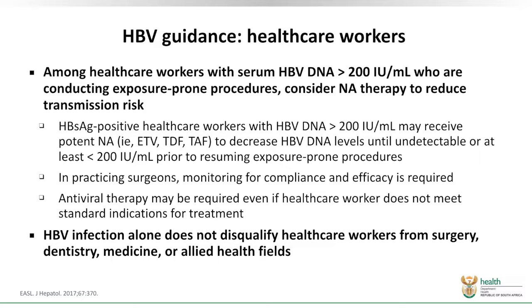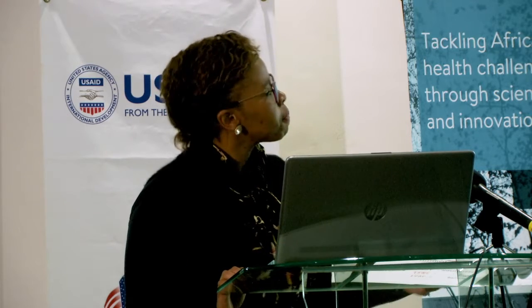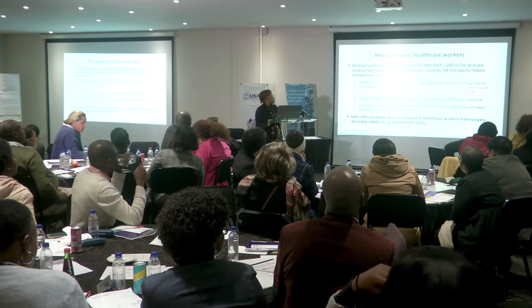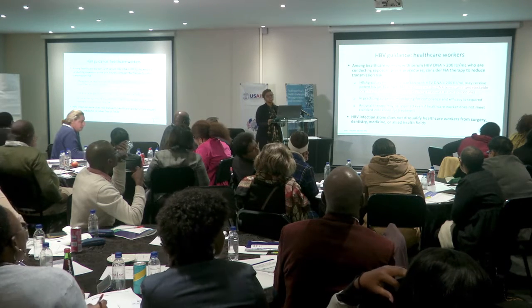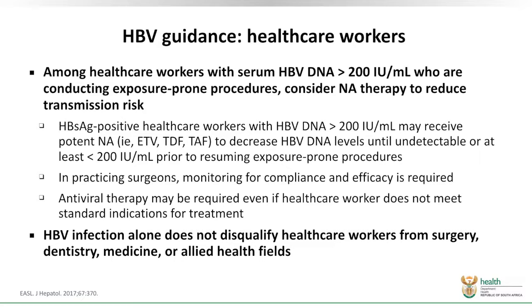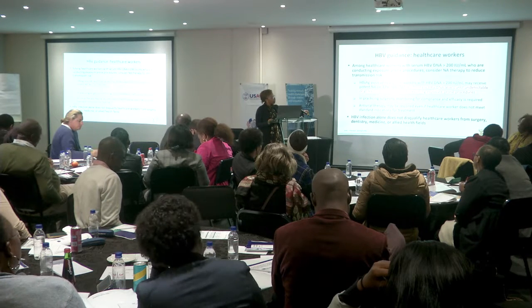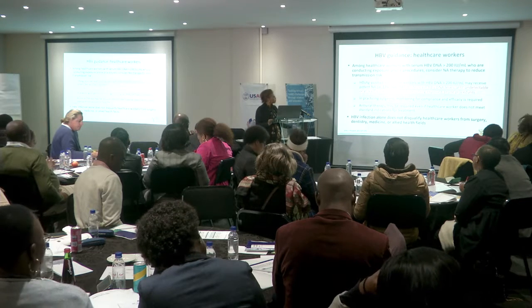For healthcare workers who are hepatitis B positive with a viral DNA of more than 200, those conducting exposure-prone procedures would need nucleotide analogue therapy to reduce transmission to the patient. The alternative to standard tenofovir is TAF, which is a precursor and is preferred because the renal and bone density risks are less. The aim is to decrease the viral DNA to undetectable levels, or at least to less than 200, before they can resume procedures that expose the patient. If they are a practicing surgeon, they need to be monitored for compliance and efficacy.